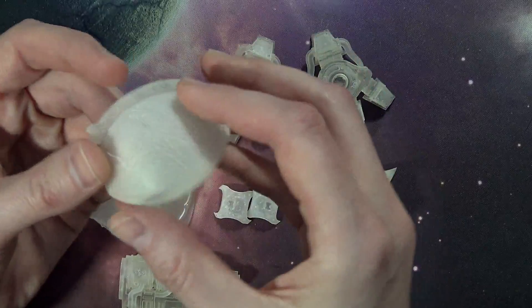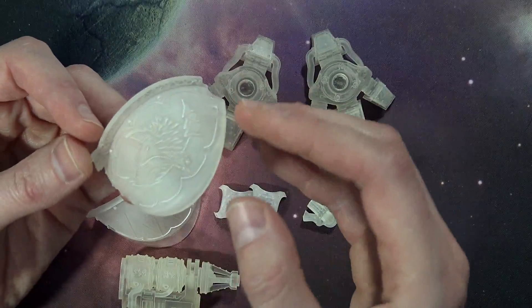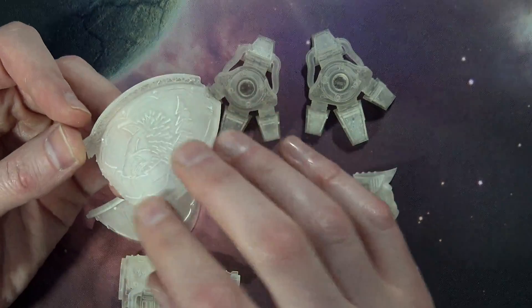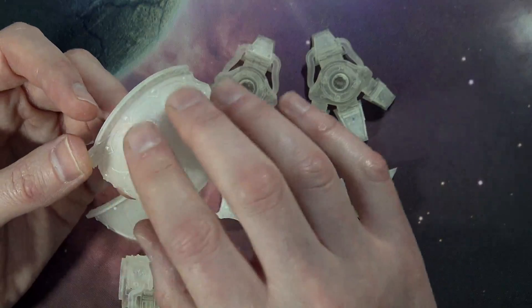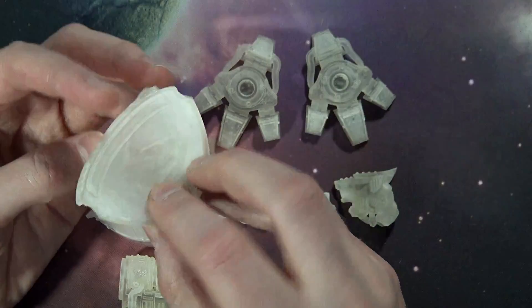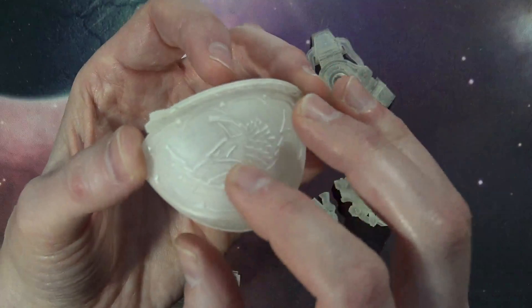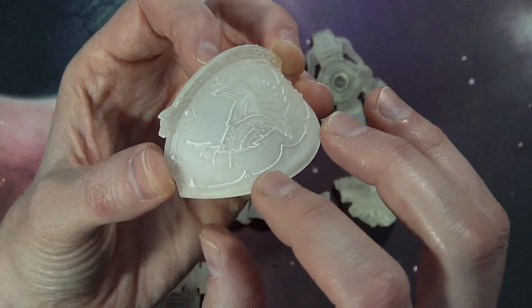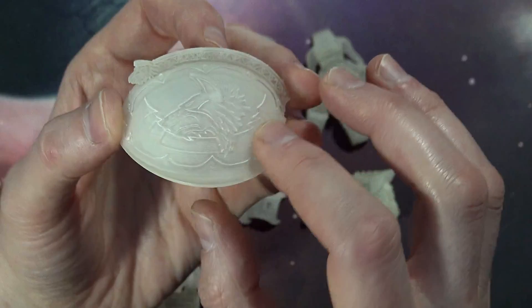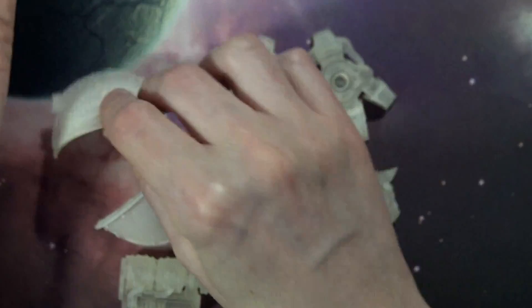Now I would recommend as with all resin or plastics or anything out there, you're definitely going to want to wash this with a little dish soap to get in there and get any leftover residues or anything from the machines. But you can see here, I mean, look at that. That is a great looking wolf symbol right there. Lots of extra detail. You got a whole tabard to fill up with anything you want.